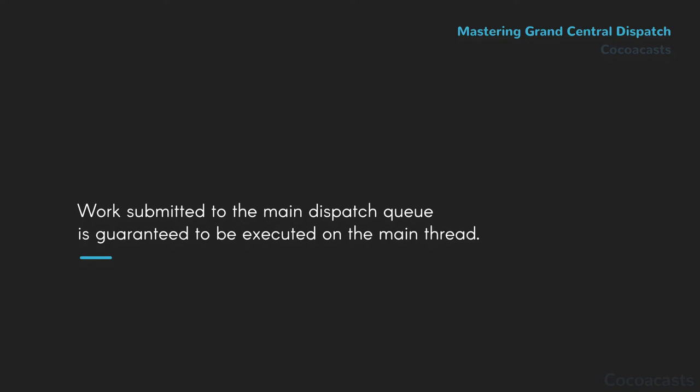Why is that important? The user interface should always be updated on the main thread. If you submit a block in which the user interface is updated to the main dispatch queue, you want the guarantee that the update is performed on the main thread. Grand Central Dispatch provides that guarantee.